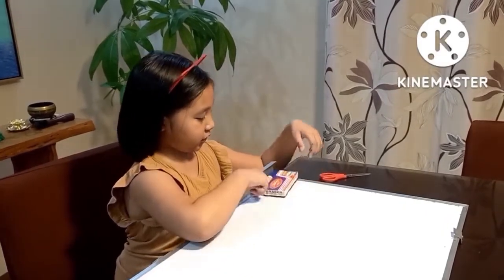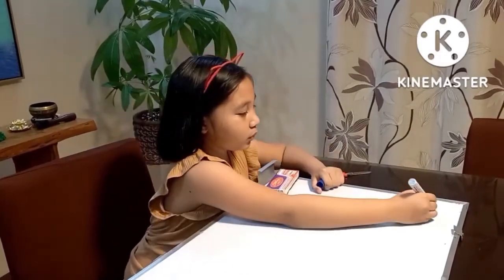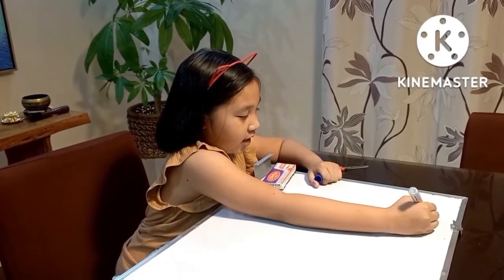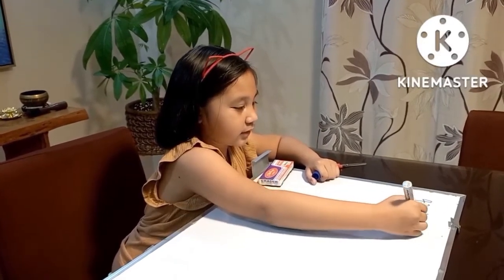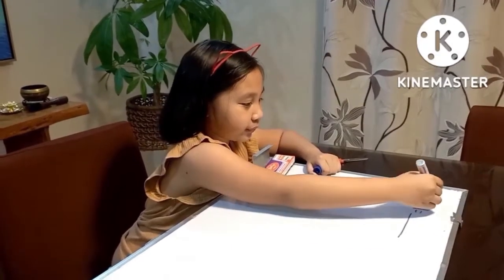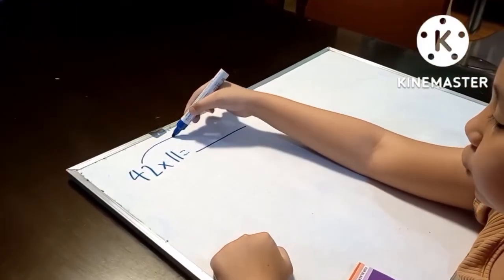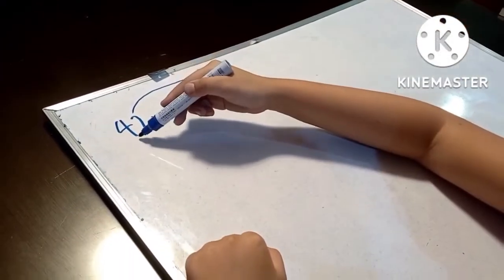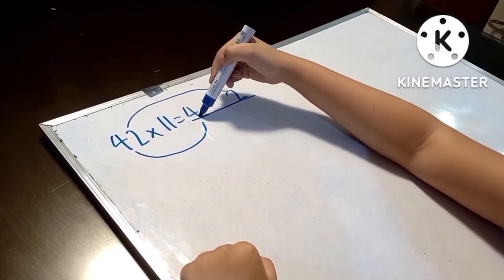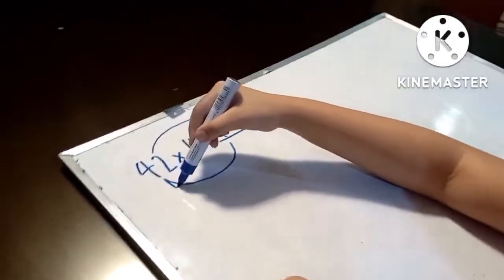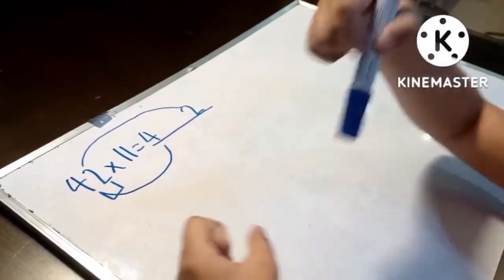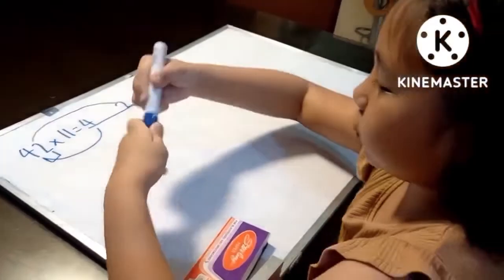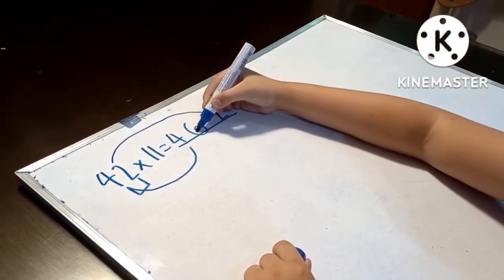We're going to start off with two digits. First, 42 times 11 equals. We're going to put two at the last and the four in the front. Then we're going to add four and two. So, five, six, right? And then six. So that's our answer.